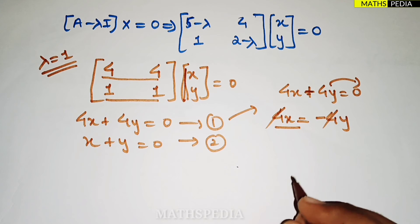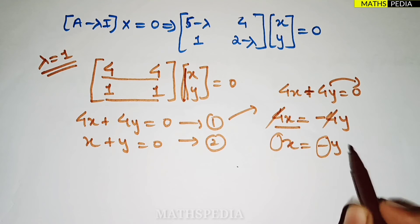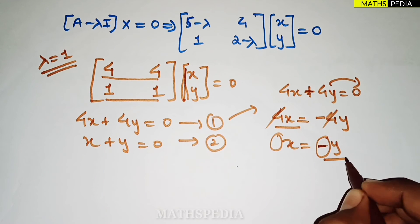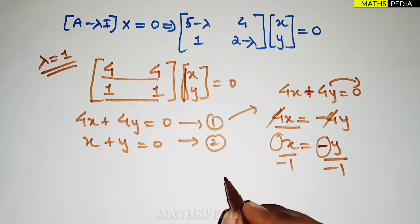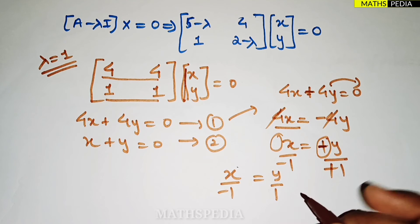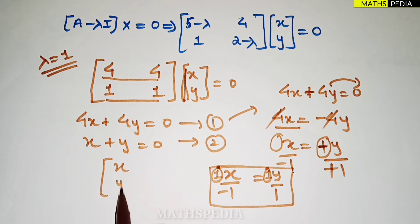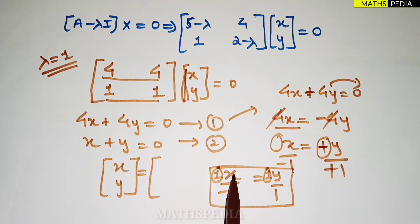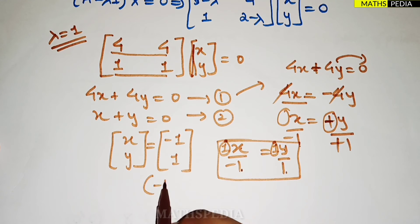From x = −y, divide both sides by −1: x/(−1) = y/1. Both coefficients are now 1. The eigenvector is formed from the denominators: [−1; 1]. So the eigenvector corresponding to λ = 1 is [−1, 1].